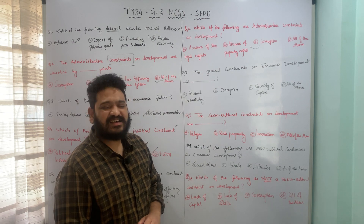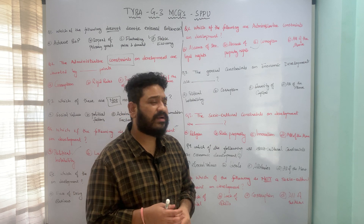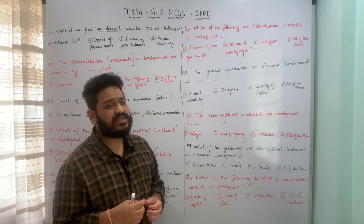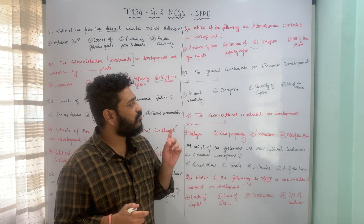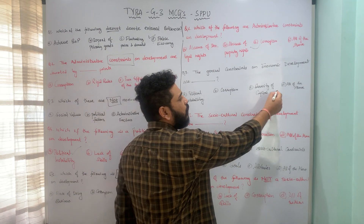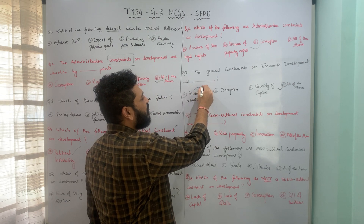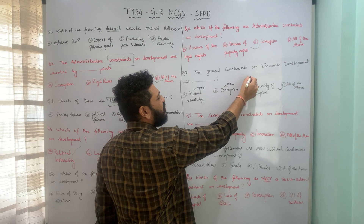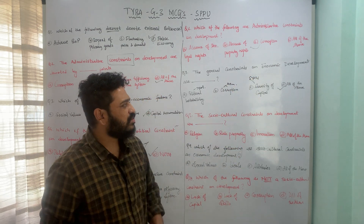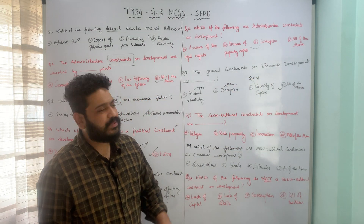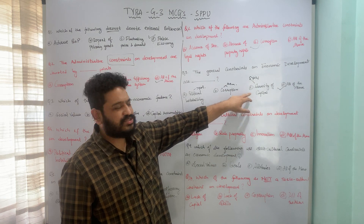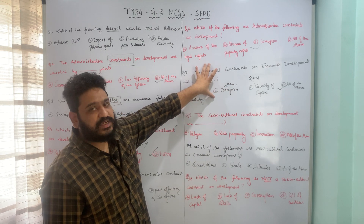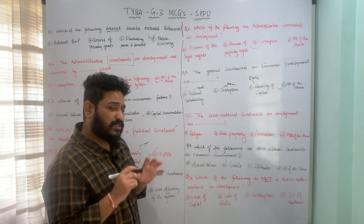All of these act as obstacles to the process of development — scarcity of capital, corruption, and political instability. Political instability is a political constraint, corruption is an administrative constraint, and scarcity of capital is an economic constraint. Therefore, option D — all of the above — is the correct answer for general constraints on economic development.